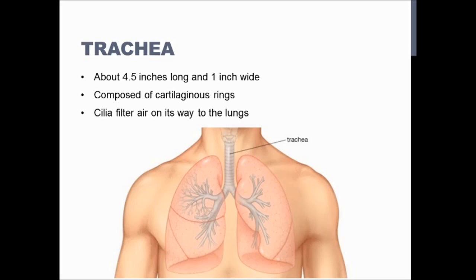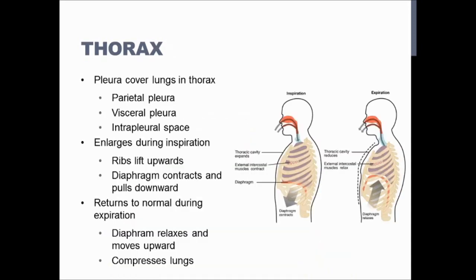Your thorax enlarges during inspiration. If you take a deep breath in, you can see your chest expand and your ribs lift upward. Your diaphragm contracts and pulls downward, allowing more space to open up in your thorax so your lungs have more room to take in air. When you breathe out, your chest returns to its normal position because the diaphragm relaxes and moves upward, compressing the lungs a little to push air out. Think of the diaphragm like a muscle and it's easier to remember its function.